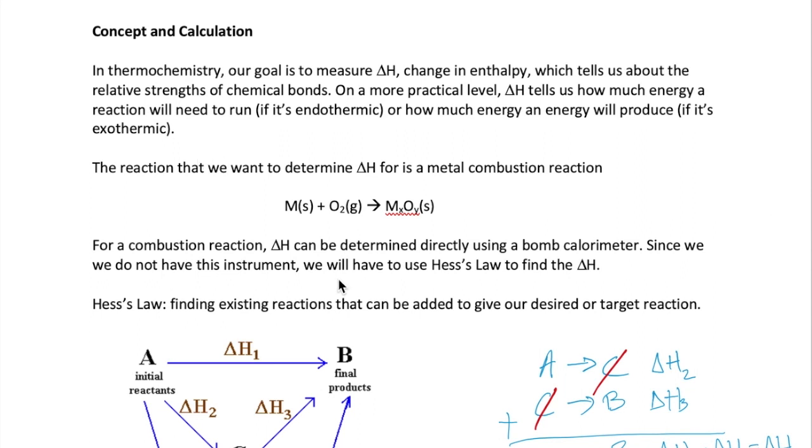Today we will determine the delta H for a metal combustion reaction. The reaction looks like the following: a metal M reacts with oxygen to form MxOy, which is a metal oxide. The X and Y values depend on the type of metal we're using. Now, the delta H of a combustion reaction is usually measured in an instrument called a bomb calorimeter, but we don't have that instrument, so we're going to have to come up with an alternative method.